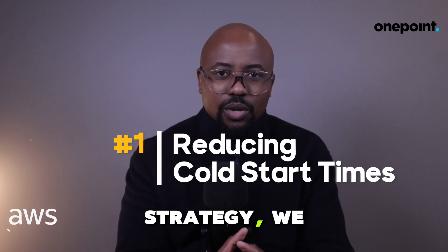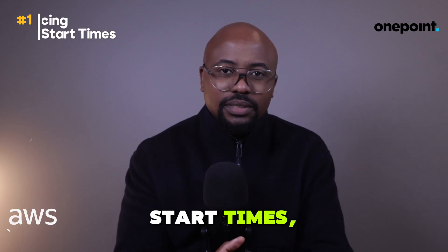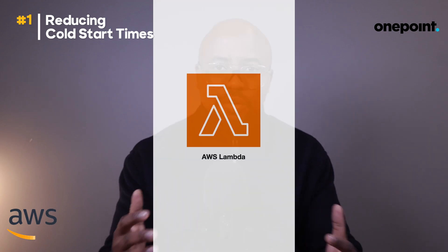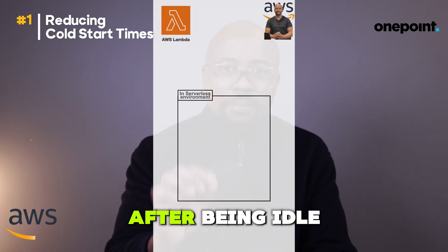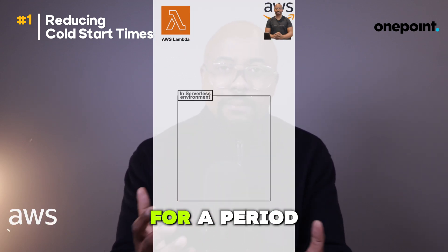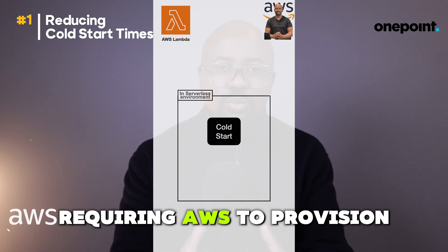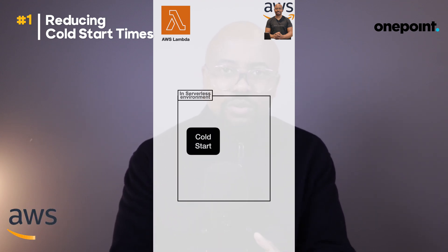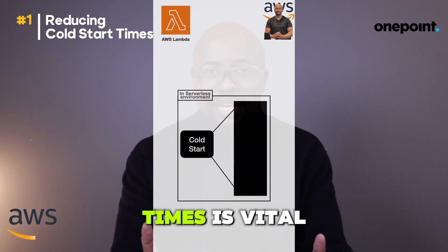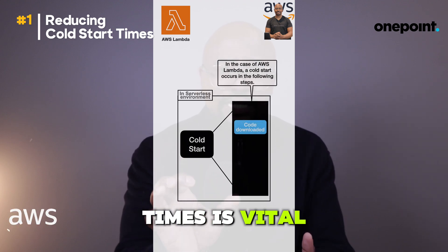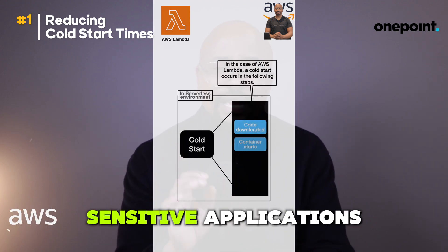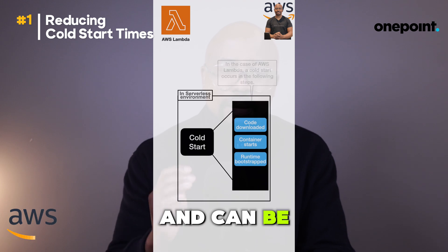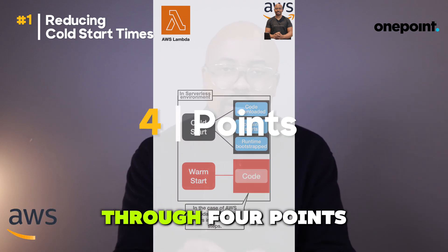As the first strategy, we have reducing cold start times. A cold start occurs when an AWS Lambda function is invoked after being idle for a period, requiring AWS to provision a new instance of the function. Reducing cold start times is vital for performance-sensitive applications and can be achieved by going through four points.